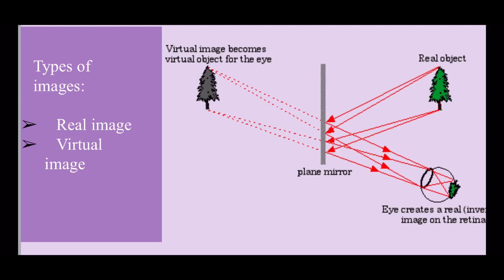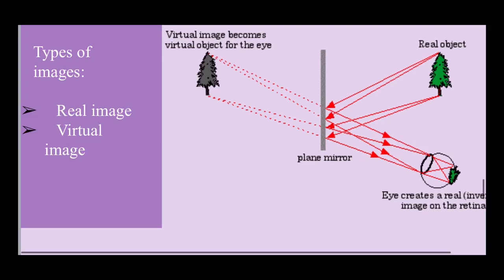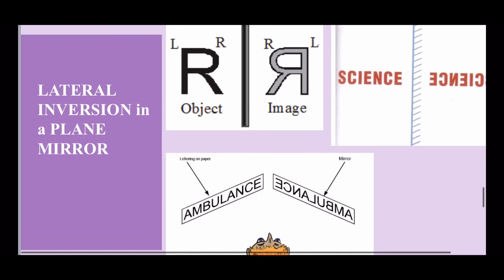In the plane mirror, your right side appears to be the left side and your left side appears to be the right side. This interchange of right and left sides of an object and its image in the plane mirror is called lateral inversion. You can test this effect by standing in front of a mirror. Raise your right hand and you will find that your left hand has been raised in the mirror.